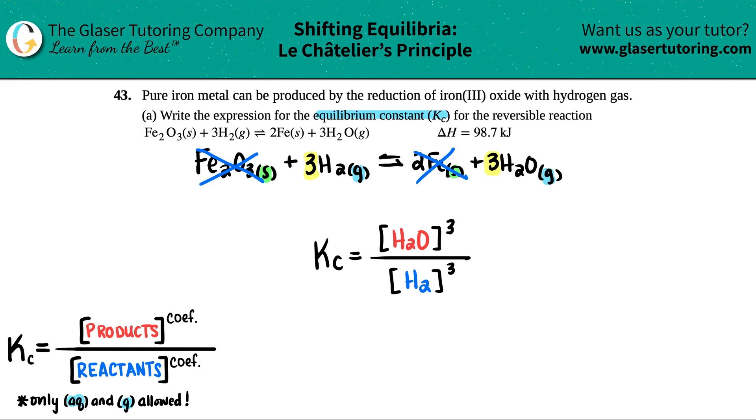Just know that you can't simplify this, right? Even though it might be a little tempting—something is cubed and something is cubed—but since they're two totally different species, H2O versus H2, I can't do anything to simplify this. And we're done! So this is the Kc expression. Pretty cool, guys.